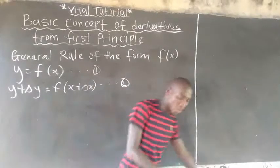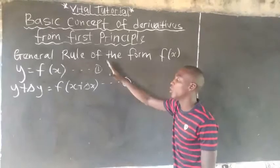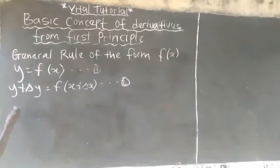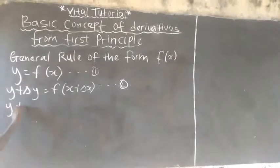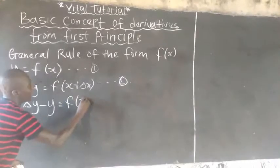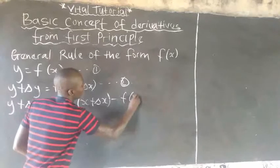Step number 3 now is you will subtract equation 1 from equation 2. So it will be y plus change in y minus y equals to f(s plus change in s) minus f(s).